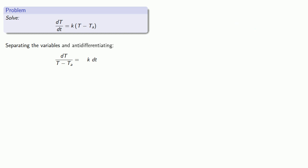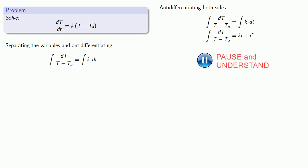Now let's anti-differentiate both sides. Over on the right-hand side, remember k is just a constant, so the anti-derivative of k dt is just going to be kt plus whatever our constant is going to be.